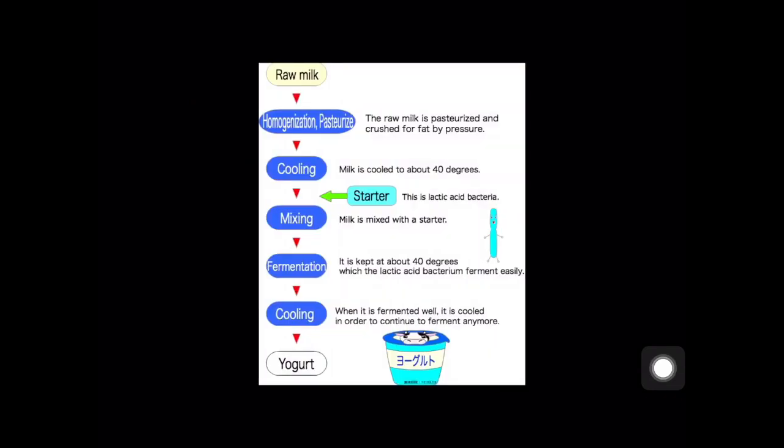Here is the process of producing yogurt. First, raw milk is pasteurized and crushed for fat by pressure — this is the homogenization and pasteurization process. Then cooling: milk is cooled to about 40 degrees. Then mixing: milk is mixed with a starter, which is a lactic acid bacteria. Then fermentation: it is kept at about 40 degrees where the lactic acid bacteria ferment easily. Then cooling: when fermented well, it is cooled to stop further fermentation. Finally, yogurt is produced.